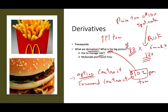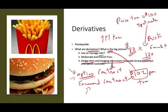Once they buy the option contract or the forward contract, we have to understand two new terms: the hedged item and the hedging instrument. The contract itself is the hedging instrument, and what they are hedging — the potatoes — is the hedged item. Now, since this chapter is dealing with foreign currency, let's talk about a more realistic example.